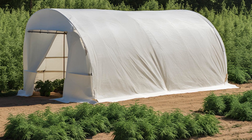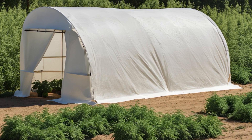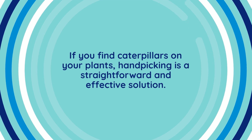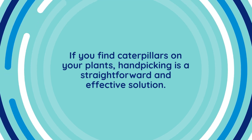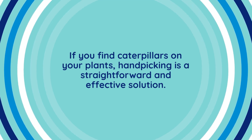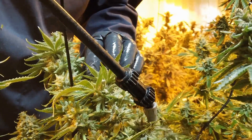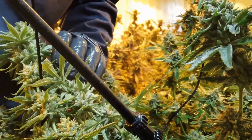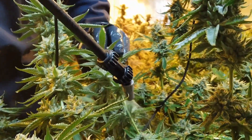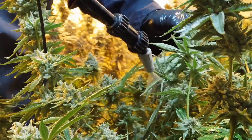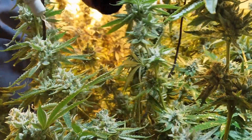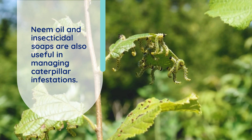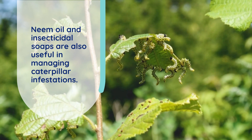Additionally, using physical barriers like row covers can prevent adult moths from laying eggs on your plants. If you find caterpillars on your plants, handpicking is a straightforward and effective solution. For larger infestations, biological pesticides like Bacillus thuringiensis can be used, as it specifically targets caterpillars without harming beneficial insects. Neem oil and insecticidal soaps are also useful in managing caterpillar infestations.